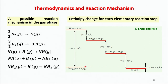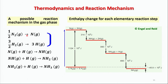Converting the initial mixture to atomic nitrogen and atomic hydrogen in the gas phase requires a huge amount of energy. There is a large activation barrier for this first elementary step — the major energetic barrier to the entire transformation. Once this state is formed, the system progressively loses energy to form the ammonia molecule.